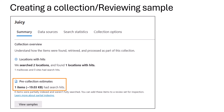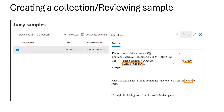After running the search, one item is estimated. Clicking 'View Samples' shows a preview — you can see Adele sent this to Diego, but Grady also appears, suggesting this is a group chat. That gives us an additional pivot point: Grady could also be a person of interest. The actual message reads: 'Haha I'm fine thanks, I found something juicy' — and mentions waiting for Grady to reply.